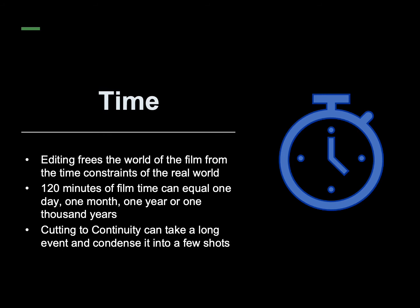Time: editing frees the world of film from the time constraints of the real world. 120 minutes of film time can equal one day, one month, one year, or even 1,000 years. Cutting to continuity can take a long event and condense it down into just a few shots.